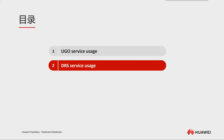After finishing the application migration with UGO, let's take a look at the third section, which is the operation demonstration for the DRS service. In this lesson, we will create a synchronization task from Oracle to GaussDB on the DRS console. First, let's introduce the DRS service — basically, where DRS stands and what it can do.